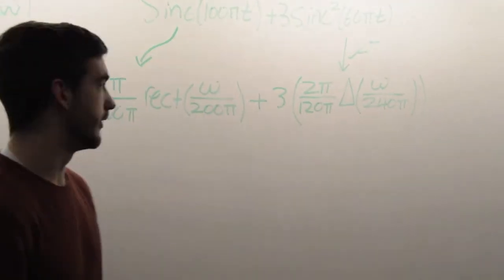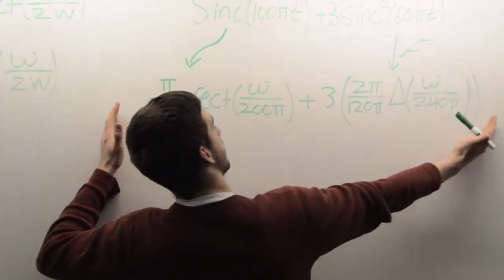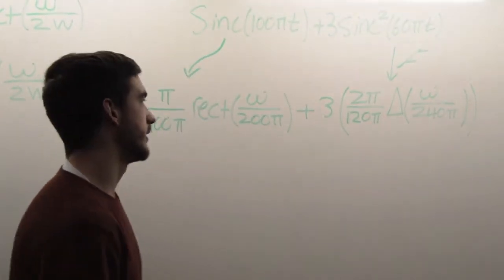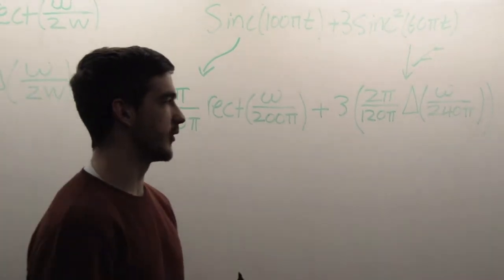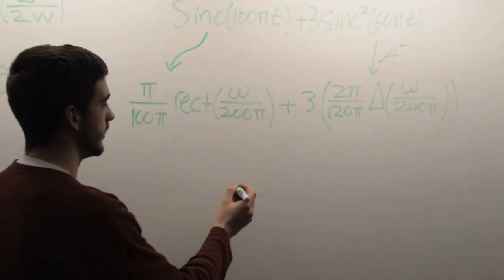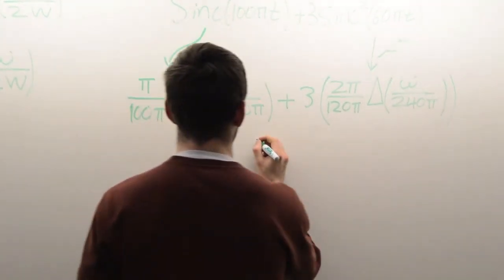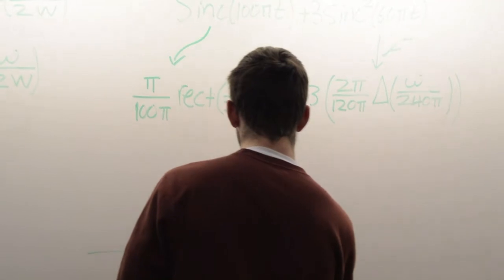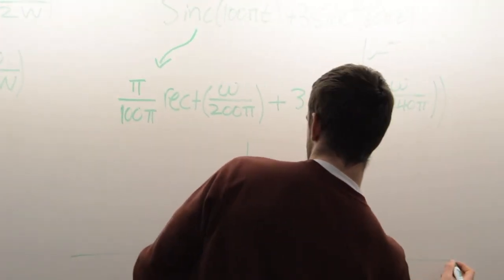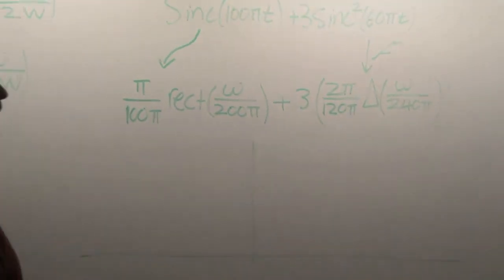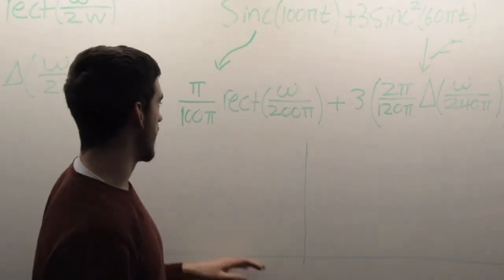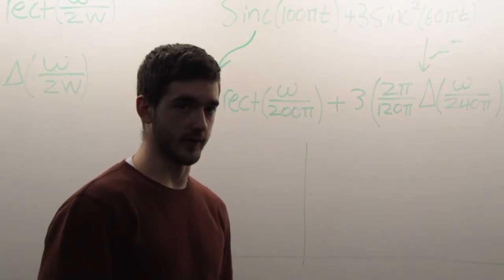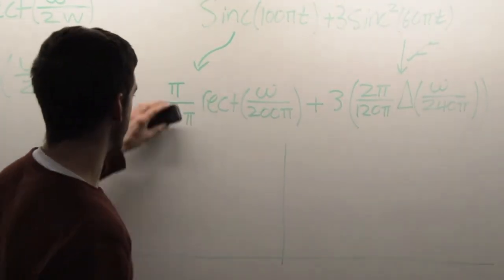This right here is the Fourier transform of this function. Now what we need to do is, I think it would be helpful to plot it so you can see what it looks like on a graph. I'm going to block the whiteboard for a second. For the sake of this problem, I'm going to take away these constants because they don't affect the bandwidth of the signal.